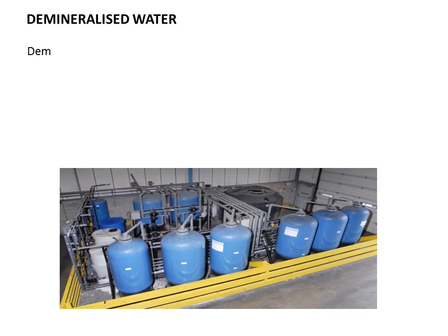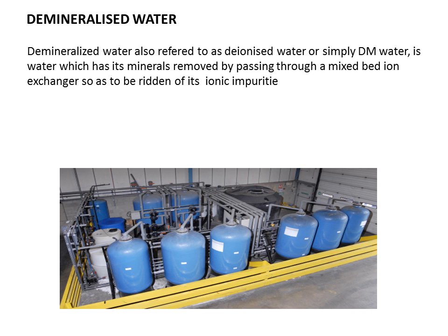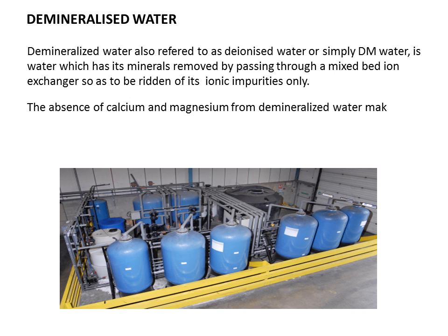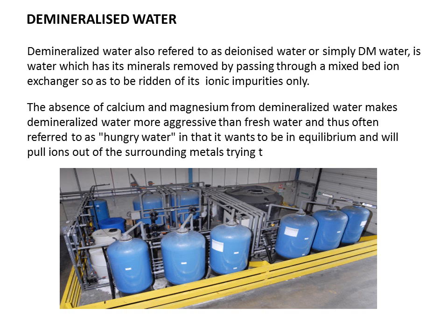Demineralized Water, also referred to as Deionized Water or simply DM Water, is water which has minerals removed by passing through a mixed bed ion exchanger, so as to be rid of its ionic impurities only. Common impurities and bacteria remain as-is. The absence of calcium and magnesium makes demineralized water more aggressive than fresh water, often referred to as 'hungry water,' in that it wants to be in equilibrium with full ions from surrounding materials, trying to satisfy its hunger.